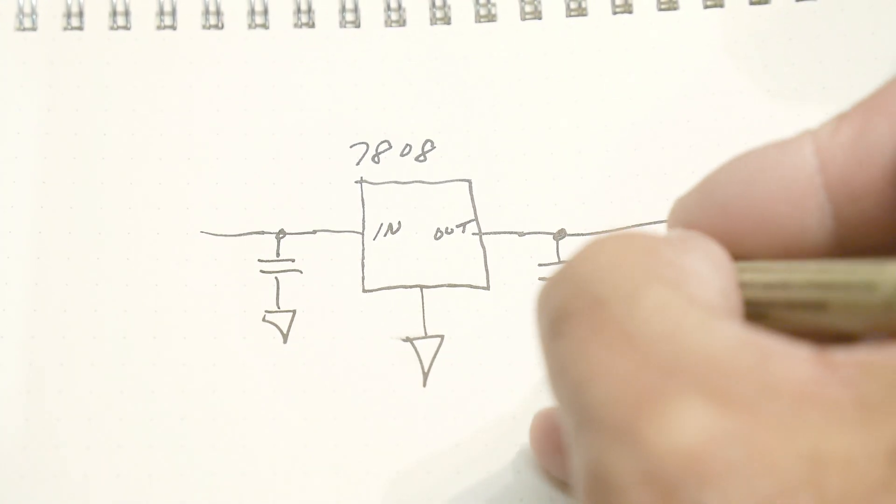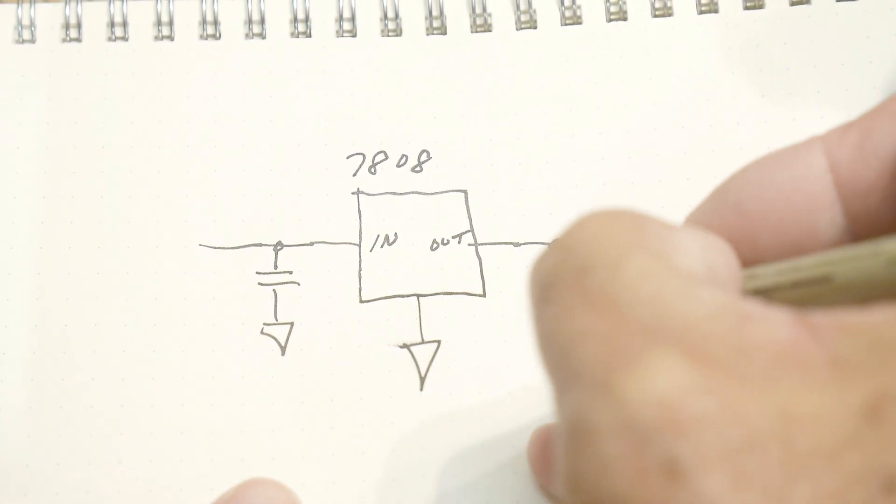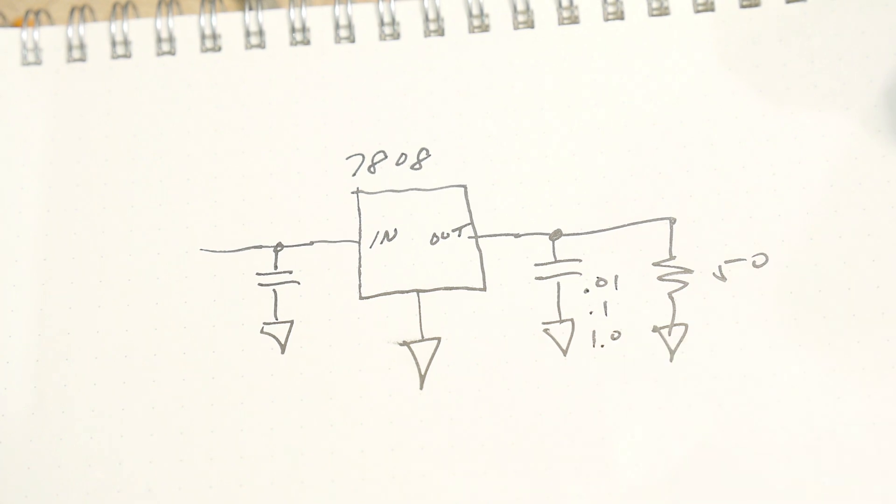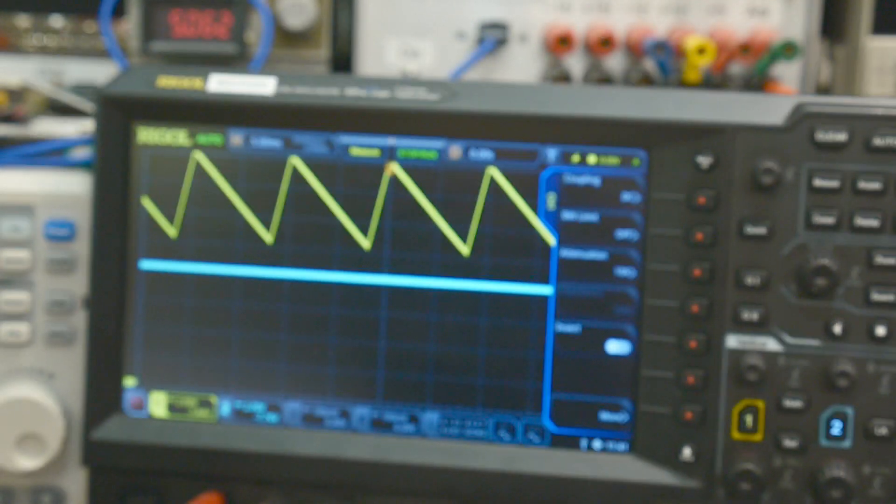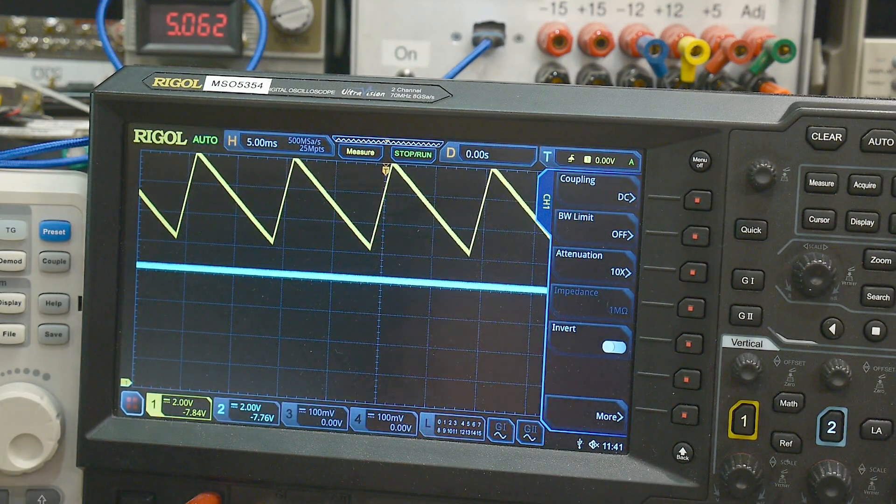So we went from 0.01 to 0.1 to 1.0 microfarads and you can see it does change things on the output. So I'm a little bit surprised by the result actually. I expected it to do better. Now this is a very sharp ripple, it's not a round ripple.